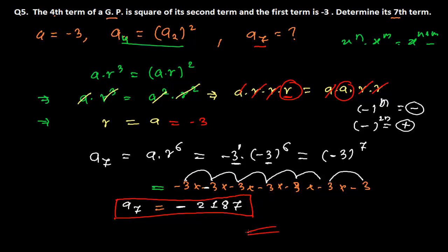This is how you find any number of terms in this kind of problem. First write down what you have, use the given hint — here that the fourth term is the square of the second term — to find the unknown common ratio r, which turned out to equal the first term minus 3. Then substitute a and r into the seventh term formula to get the answer. We'll be doing more problems in the next video. Bye bye!